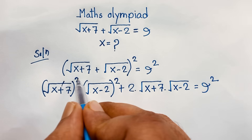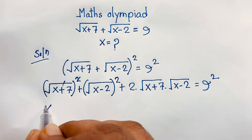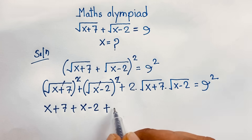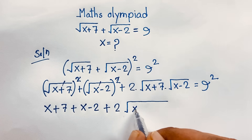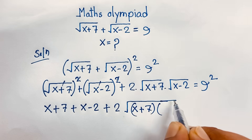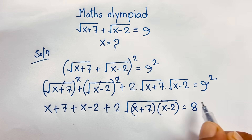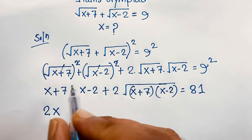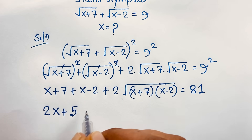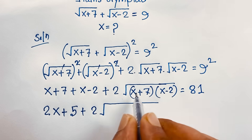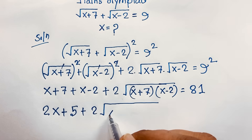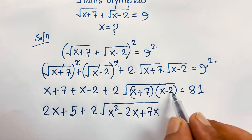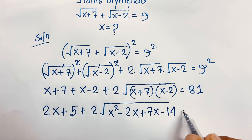The square roots cancel out. We get x plus 7, plus x minus 2, plus 2 times square root of (x plus 7)(x minus 2), equal to 81. Now x plus x is 2x, and 7 minus 2 is positive 5. Expanding (x plus 7)(x minus 2): x times x is x squared, x times negative 2 is negative 2x, 7 times x is 7x, and 7 times negative 2 is negative 14. So we have 2x plus 5, plus 2 times square root of (x squared minus 2x plus 7x minus 14), equals 81.